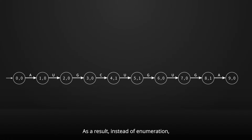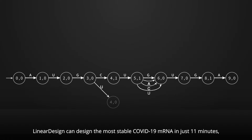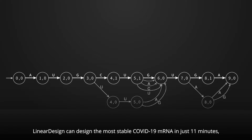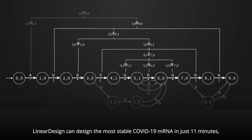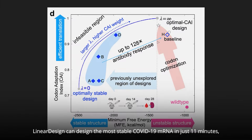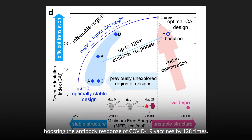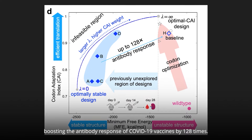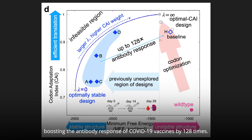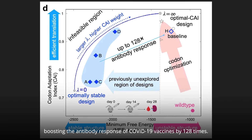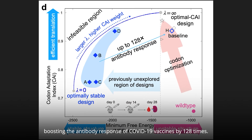As a result, instead of enumeration, Linear Design can design the most stable COVID-19 mRNA in just 11 minutes, boosting the antibody response of COVID-19 vaccines by 128 times.